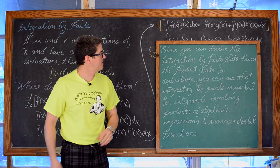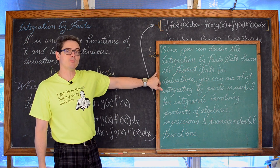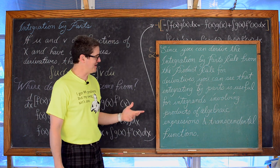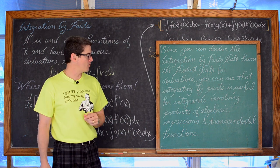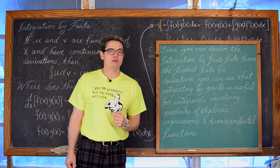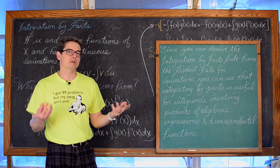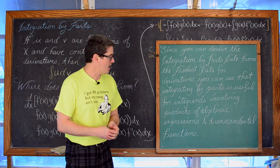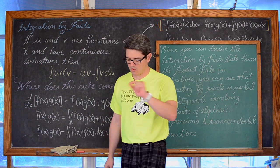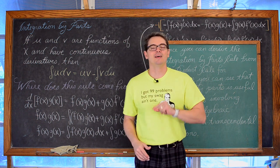Since you can derive the integration by parts rule from the product rule for derivatives, integrating by parts is useful for integrands involving products of algebraic expressions. It will also be helpful when we have transcendental functions like the natural exponential function e to the x. Now we need the suggestions for how to set up u and dv.